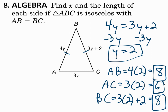Remember: if a triangle has all acute angles, it's acute. If there's one obtuse angle, it's obtuse. One right angle makes it a right triangle. And if all angles are the same, it's equiangular. For sides, if all sides are different, it's scalene. If at least two sides are the same, it's isosceles. And if all sides are the same, it's equilateral.